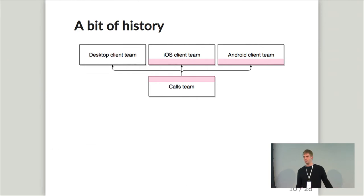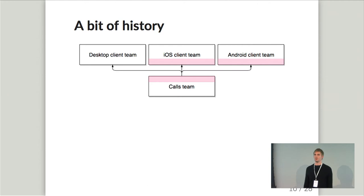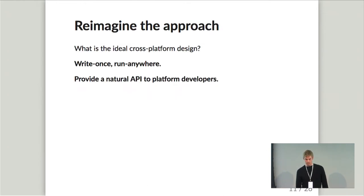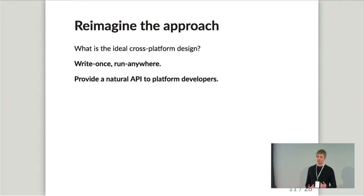This is a different view based on the org of the Slack teams. The calls team is vending the C++ library to the various platform client teams, and this shows the repeated application logic being re-implemented by the various teams. So we launched in this state, but afterwards decided to reimagine the approach. We took a step back and said: what is the ideal cross-platform design in this context? We want, ideally, to write once and run anywhere.